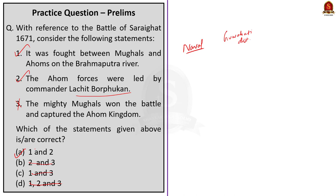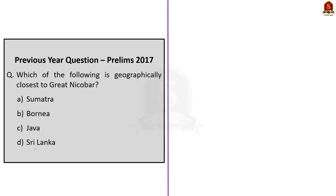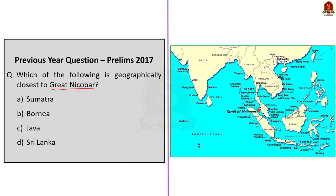Coming to the third question, a previous year prelims question: Which of the following is geographically closest to Great Nicobar? From the map, we can see that Sumatra is closer to Great Nicobar than Java. So the correct answer is Sumatra.